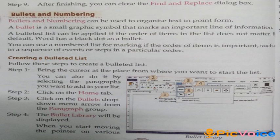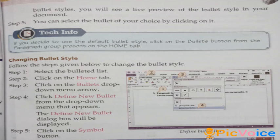Creating a Bulleted List. Follow these steps: Step 1: Bring the cursor to the place where you want to start the list, or select the paragraphs you want to add. Step 2: Click on the Home tab. Step 3: Click on the Bullets drop-down menu arrow from the Paragraph group. Step 4: The Bullets library will be displayed. Moving the pointer over various bullet styles shows a live preview in the document. Step 5: Select the bullet of your choice by clicking on it.